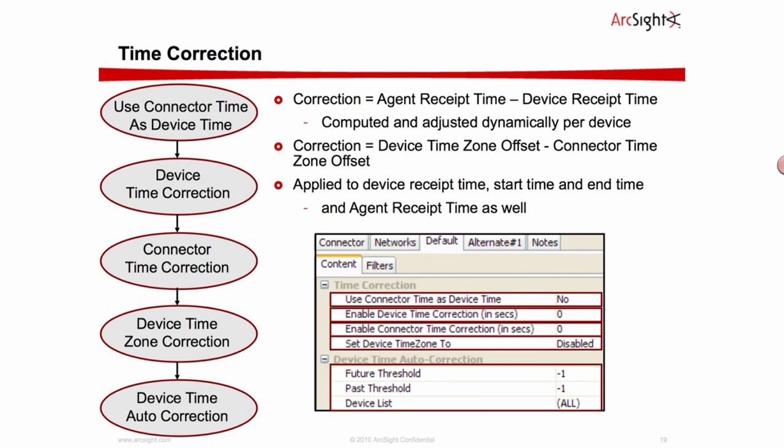We can also do a level of time correction. This makes a lot of sense in a global organization where we don't necessarily control all the time zones, times, and data center equipment. We've always pushed for customers to use NTP wherever possible across devices and systems. But if that is a problem and we can't do the correct mapping of times, we can actually do some overriding — connector device and time correction. It's a very specific use case but the capability is there for you to make those corrections to the times.